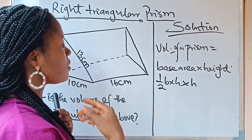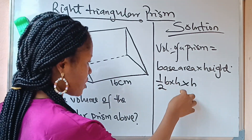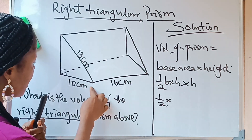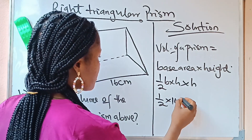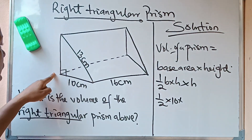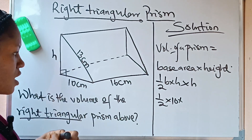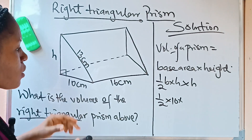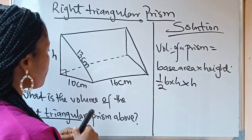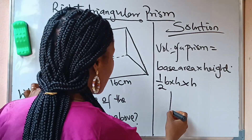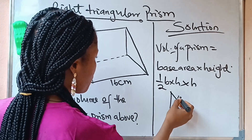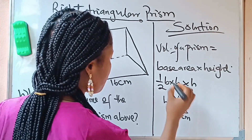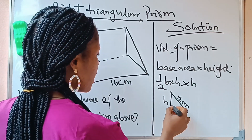The area of the base is half times base times height. The base of this right-angled triangle is 10, so we have half times 10 times h. However, the height h of the triangle is not given to us, so we need to find it. To get h, we are going to use the Pythagorean theorem. Let me draw out this right-angled triangle — we have 13 cm as the hypotenuse, h as the unknown side, and 10 cm.